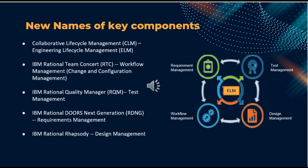It is important to note that IBM has continued to evolve and enhance the ELM suite. Before ELM version 7.0, ELM was called CLM, that is Collaborative Lifecycle Management. RTC is now known as IBM Engineering Workflow Management, or EWM. Rational Rhapsody Manager is now known as IBM Engineering System Design Rhapsody Model Manager. RQM is now known as Test Management, and RDNG is referred to as Requirement Management.